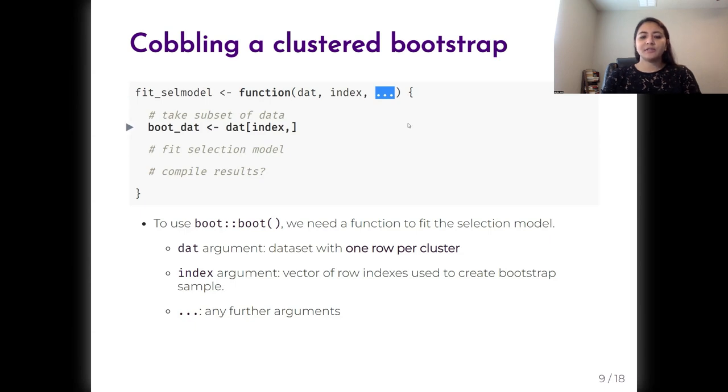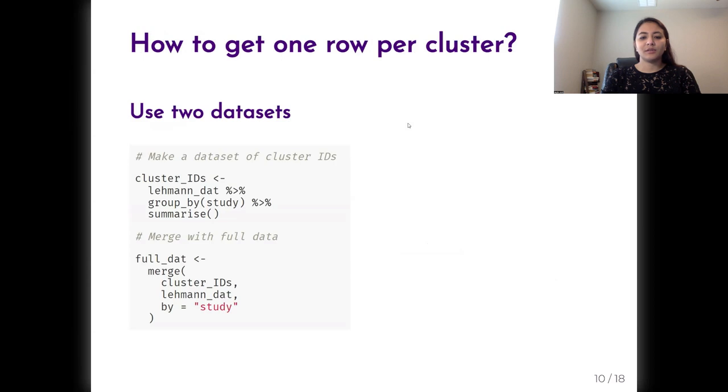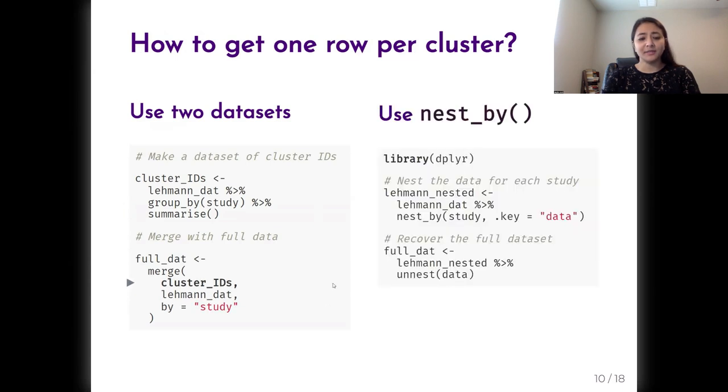Our dataset has one row per effect size and potentially multiple rows per cluster. There are at least two ways to turn this into a dataset with one row per cluster. We can use the groupby and summarize functions to create a dataset with just cluster level IDs. And then we can merge it with the full data by study to get the effect size level data. Alternatively, we can use the nestby function to nest the data by cluster. And then we can use the unnest function to recover the effect size level data.